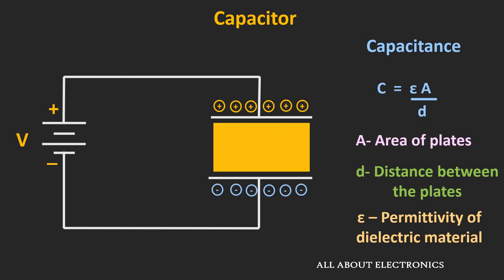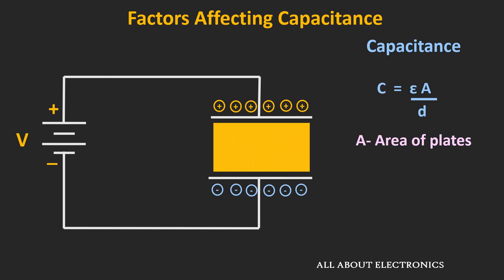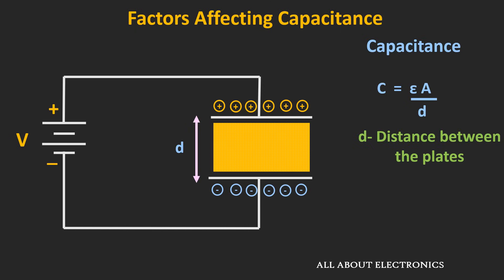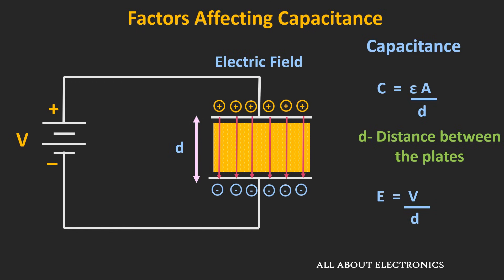The first factor is the area of the plates. As the area increases, the amount of charge that can be stored across the plates also increases, and the capacitance of the capacitor increases. The second factor is the distance between the two plates. As the distance reduces, the electric field developed across the two plates increases — since it is inversely proportional to the distance — and as the electric field increases, the charge that can be stored also increases.